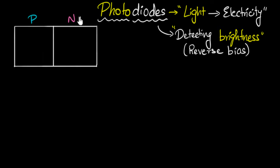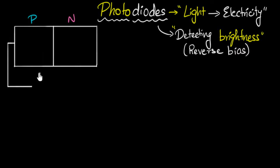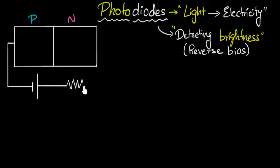Let's take our P-N junction and reverse bias it. Biasing means attaching a battery. Reverse biasing means making sure the P-side is connected to the negative and the N-side is connected to the positive. You will also always have some resistor to limit the current, making sure the diode doesn't get destroyed. This is the circuit for our photodiode.